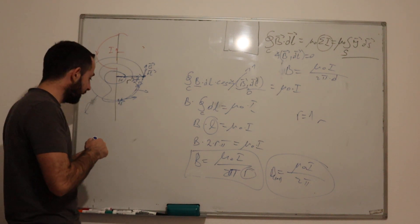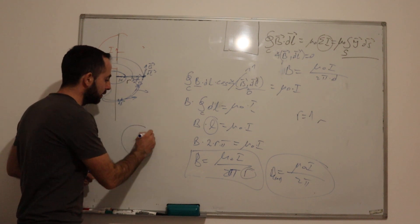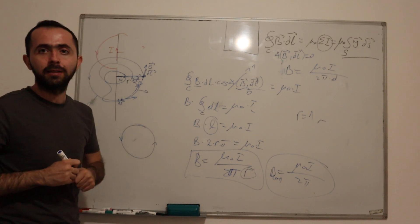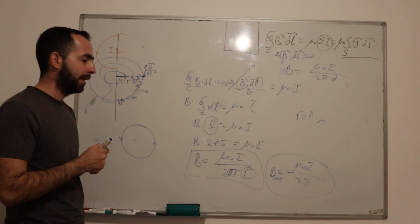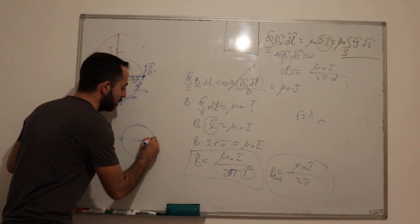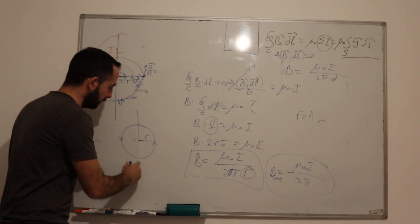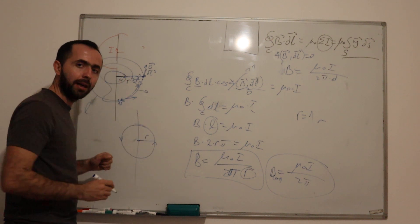And for this case, because we know that magnetic field lines are circles, we choose our closed contour to be a circle with radius R, where the center is the conductor,